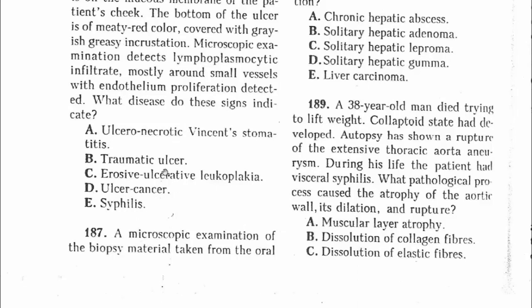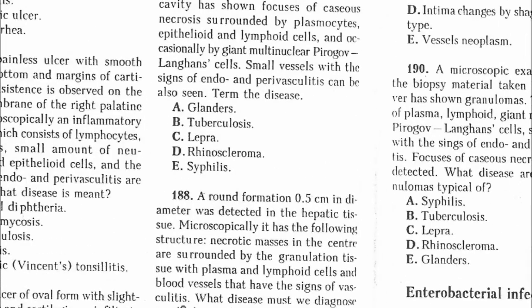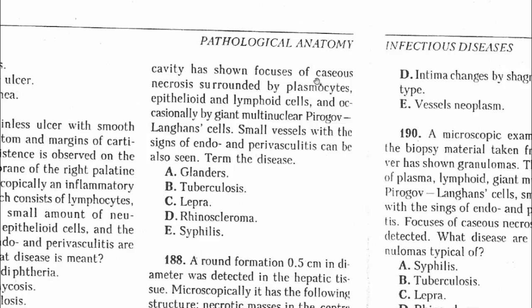Question 187: Microscopic examination of biopsy material from the oral cavity showed foci of caseous necrosis surrounded by plasmacytic, epithelioid, and lymphoid cells, and occasionally giant cells; small vessels with signs of endo- and perivascular inflammation are seen. This is a gummatous disease. The answer is E — syphilis gumma.